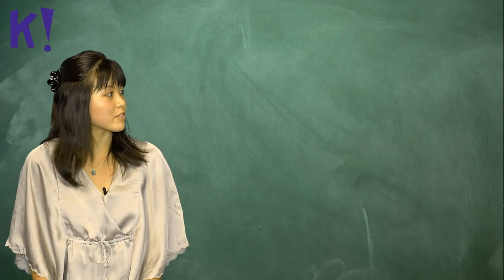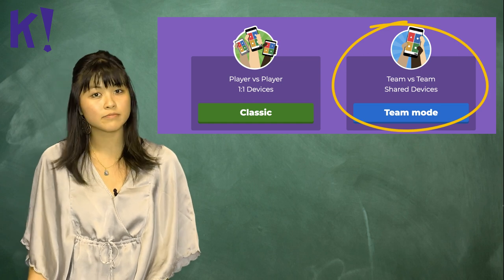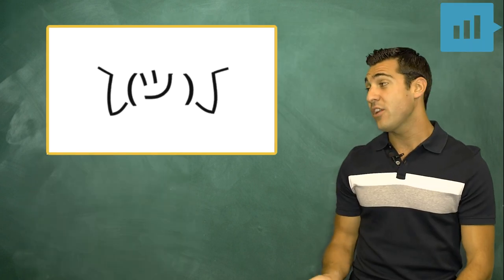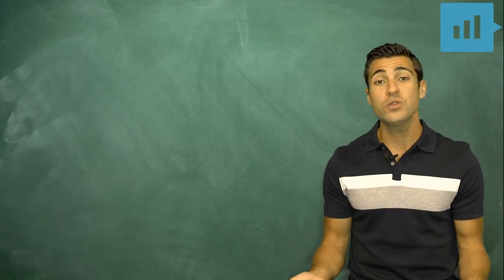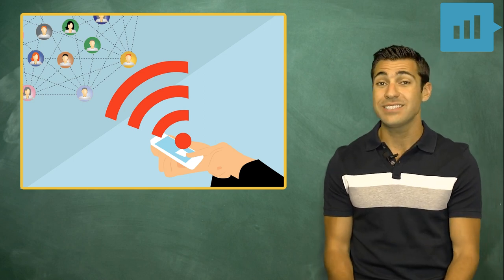What about collaboration? Kahoot has a team mode where students can work together across the classroom or even across the world. Well, Mentimeter might not have that, but if you want students to work together, just have them share one Wi-Fi connected device in a group.